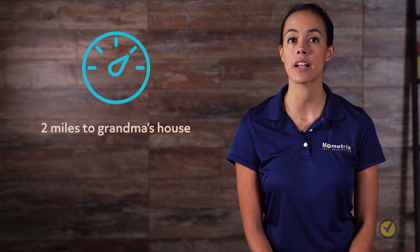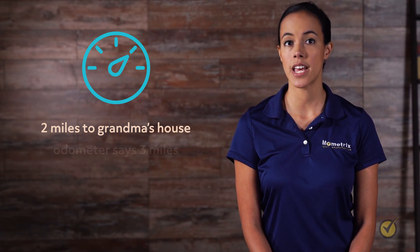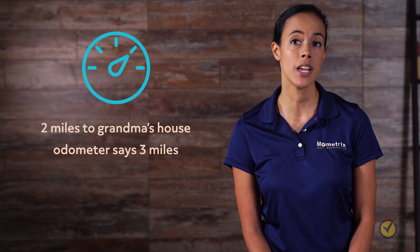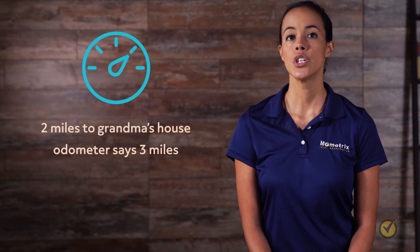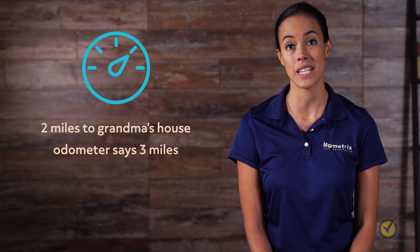For example, it's two miles to grandma's house if we went directly through the forest on a straight path. But our car's odometer says we traveled three miles. We have to go over a bridge and along a winding road so the distance we've traveled is three miles even though our displacement is less.